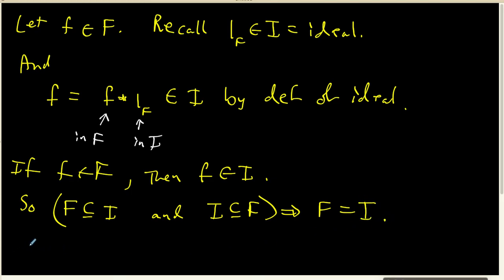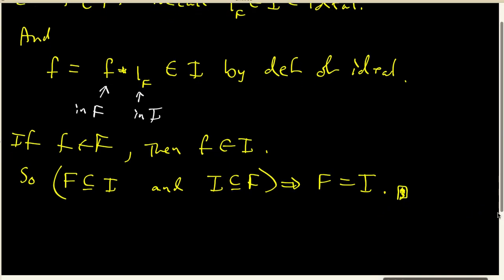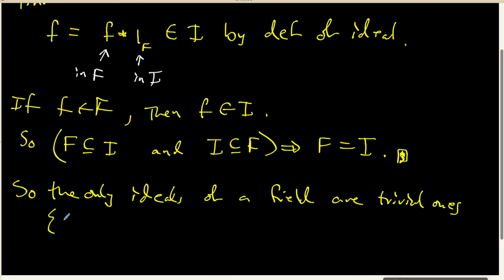In other words, what we've done is we've shown that we have finished the proof of our theorem. And I just want to recall that what this theorem says is that the only ideals of a field are the trivial ones. And the trivial ones, of course, are the zero ideal and the field itself.